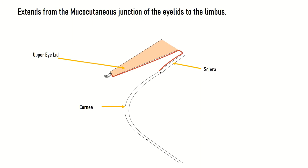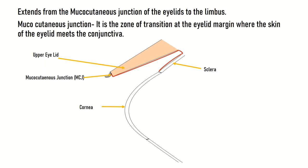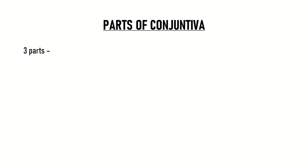Here we can see the cornea, sclera, and the upper eyelid. The mucocutaneous junction is the zone of transition at the eyelid margin where the skin of the eyelid meets the conjunctiva. At the mucocutaneous junction, the eyelid skin — which has keratinized epithelium — meets the conjunctiva, which has non-keratinized epithelium. Starting from here, the conjunctiva finally ends at the limbus.